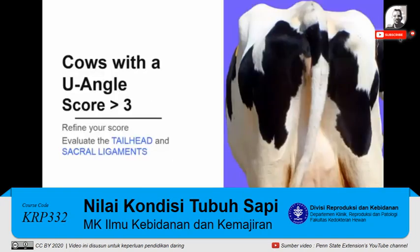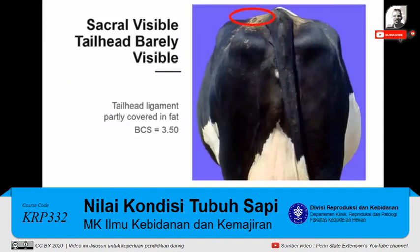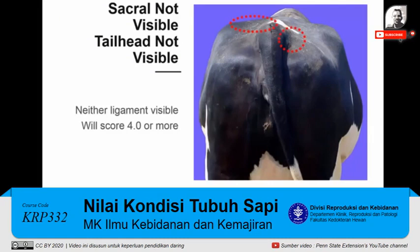Now let's go back to the first decision and work on refining scores greater than 3. We start by evaluating the tail head and sacral ligaments. The tail head ligament is found between the tail head and the pins; the sacral ligament runs between the spine and the hooks. If both the sacral and tail head ligaments are visible, the cow scores 3.25. If the sacral ligament is visible but the tail head ligament is partly covered in fat, the score is 3.5. If the sacral ligament is less visible and the tail head ligament is completely obscured by fat, the cow scores 3.75. If neither ligament is visible, the cow scores 4.0.